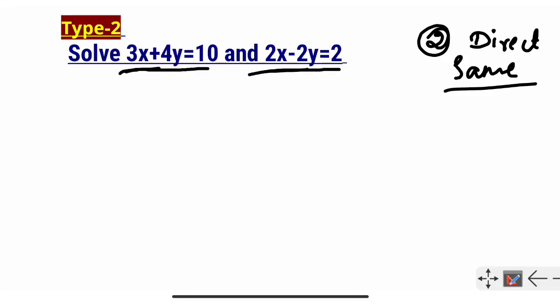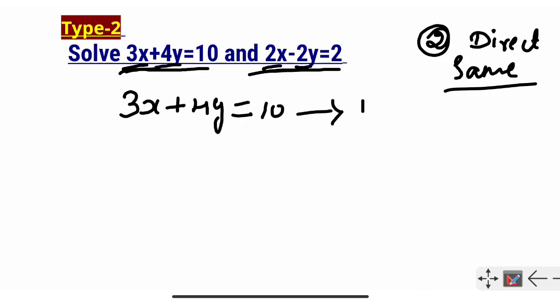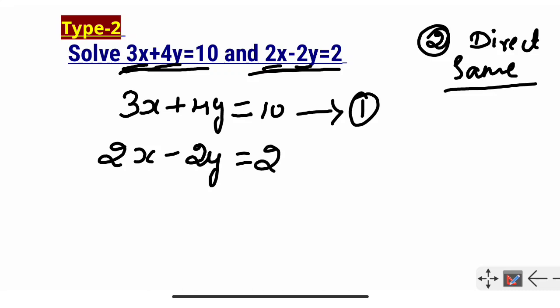Now solve: 3x plus 4y equals 10 and 2x minus 2y equals 2. We can observe that the terms are different here, so we cannot directly add or subtract. We write equation 1 as 3x plus 4y equals 10, and equation 2 as 2x minus 2y equals 2.